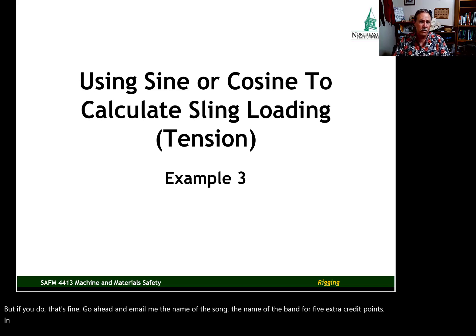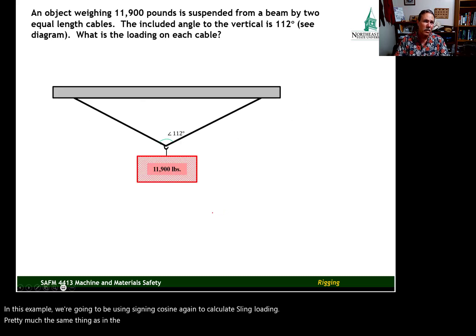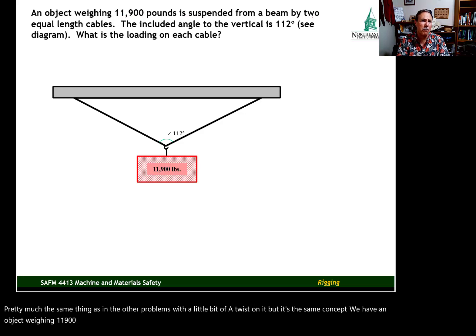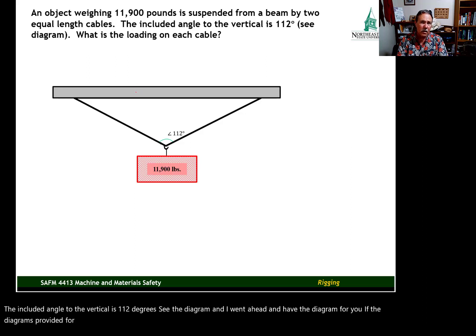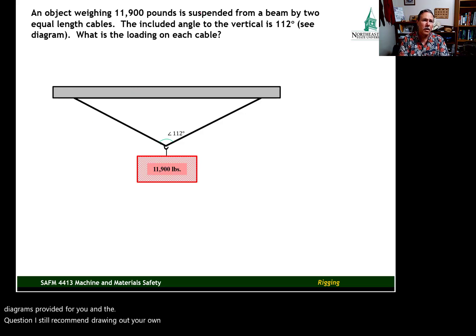In this example, we're going to be using sine and cosine again to calculate sling loading. Pretty much the same thing as in other problems with a little bit of a twist, but it's the same concept. We have an object weighing 11,900 pounds suspended from a beam by two equal length cables. The included angle to the vertical is 112 degrees. See the diagram. If the diagram is provided for you in the question, I still recommend drawing out your own diagram on your scrap piece of paper. What we're trying to do is find the loading on each cable.